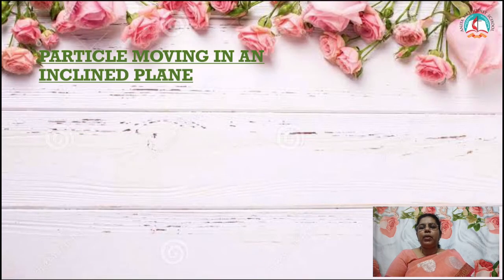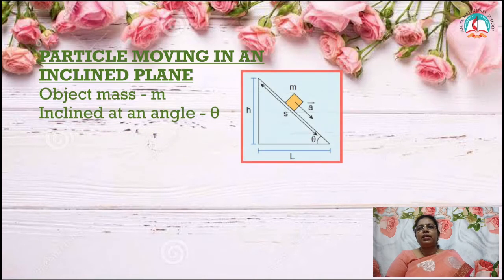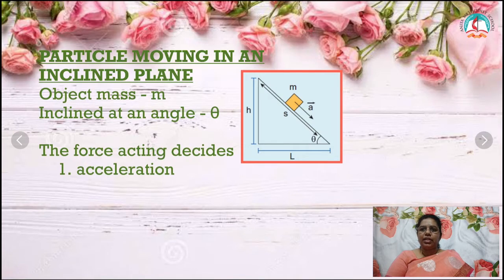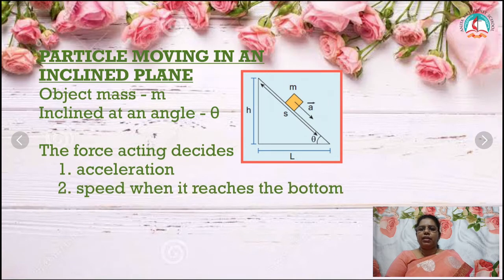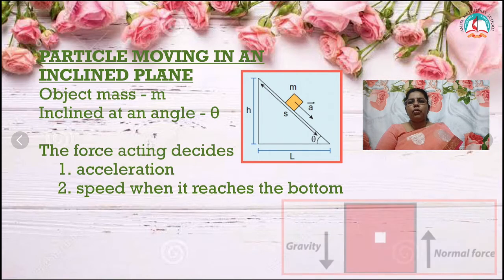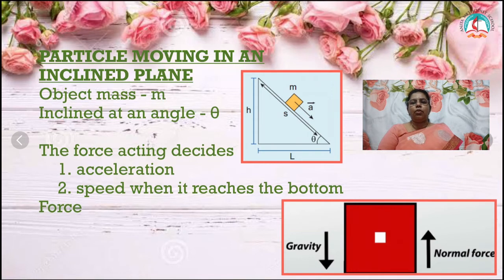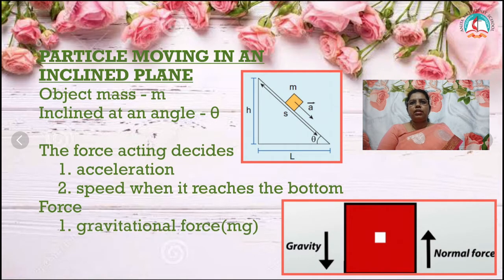Now let us learn about the particle moving in an inclined plane. An inclined plane is a slanting plane. Consider the object of mass M moving on a frictionless inclined surface, where the inclined plane is kept at an angle theta. By knowing the force acting on the particle, we can find out the acceleration of the object and the speed when it reaches the bottom. The two forces acting on the object are: the downward gravitational force Mg, and the normal force acting perpendicular to the inclined surface.